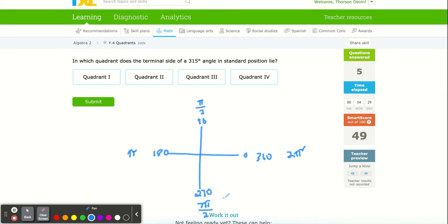So 315 degrees is larger than 270, smaller than 360. I'm in quadrant 4. That's what you would click.